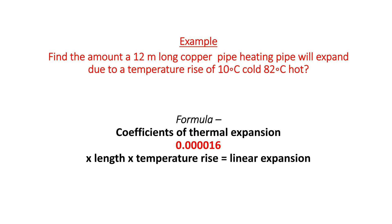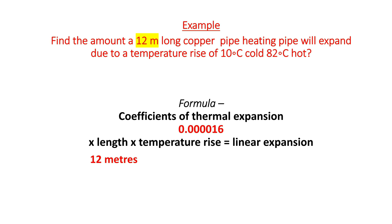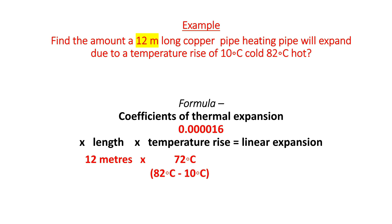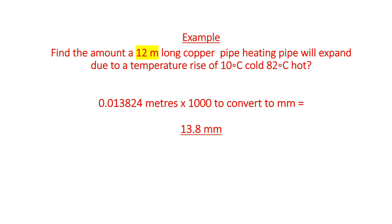We now need to note the length of the pipe, which in this case is 12 meters, and also the temperature rise. If it's 82 degrees hot and 10 degrees cold, the temperature rise is 72°C. We now multiply the three things together, giving us 0.013824 meters of expansion. If we multiply this by 1000, it gives us the answer in millimeters — 13.8 millimeters of expansion.